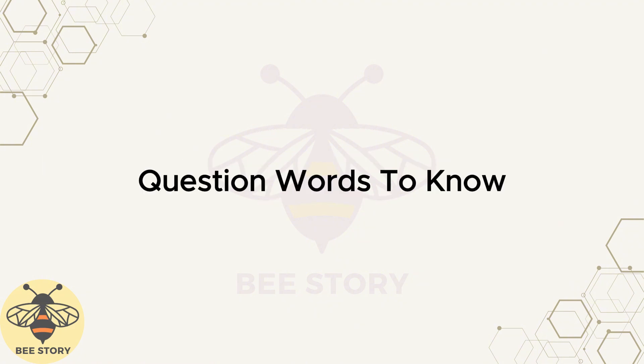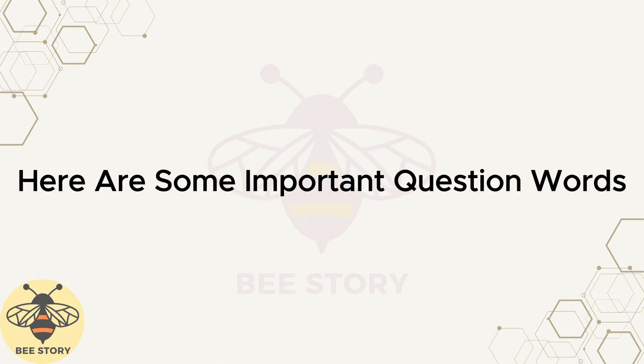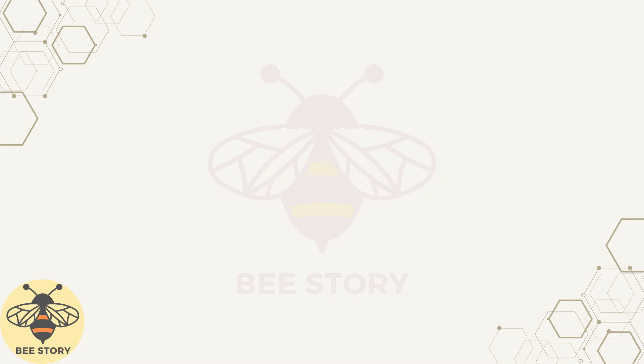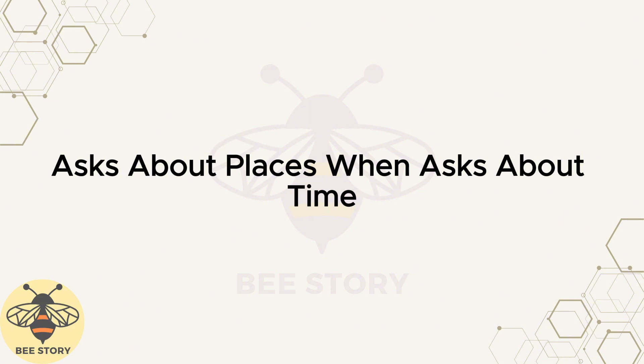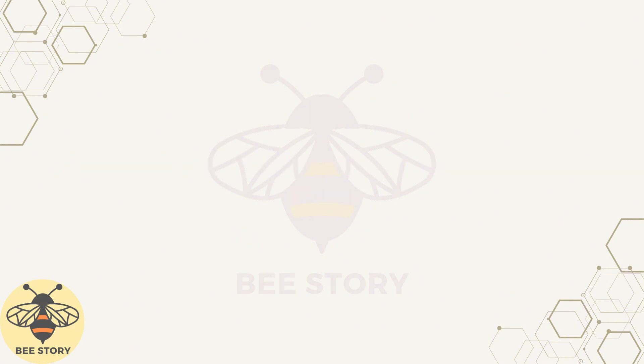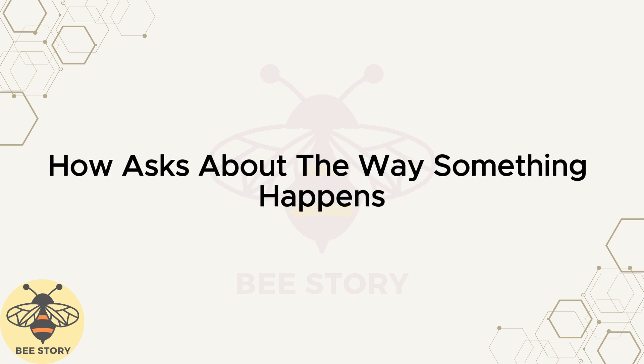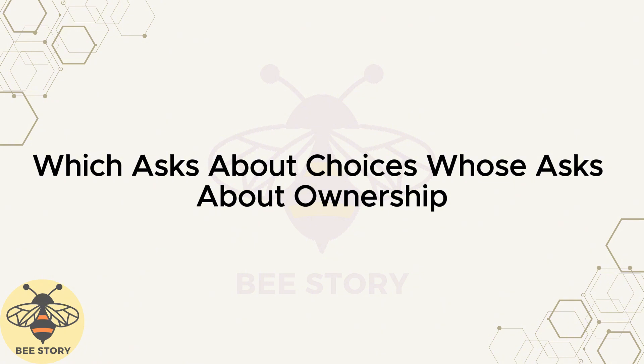Question words to know. Here are some important question words: What — asks about things. Where — asks about places. When — asks about time. Why — asks about reasons. Who — asks about people. How — asks about the way something happens. Which — asks about choices. Whose — asks about ownership.